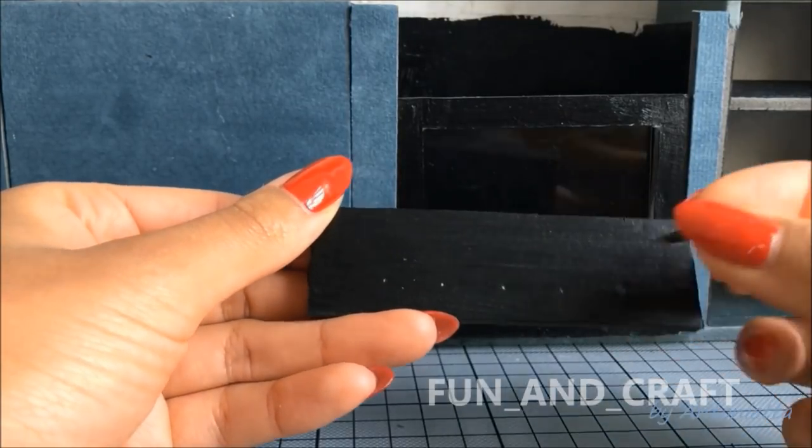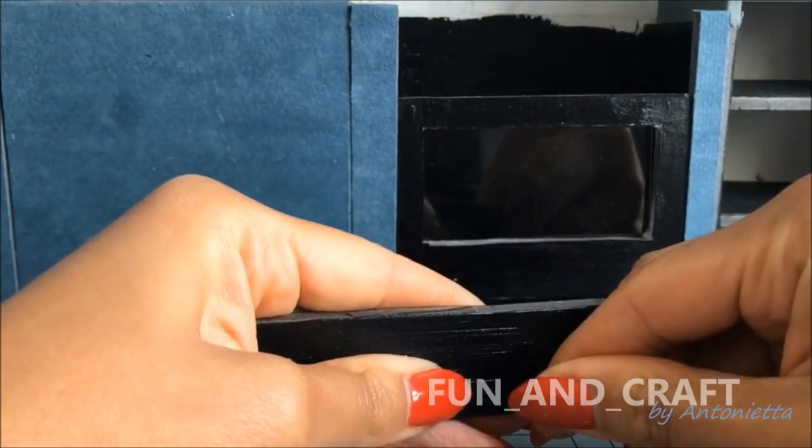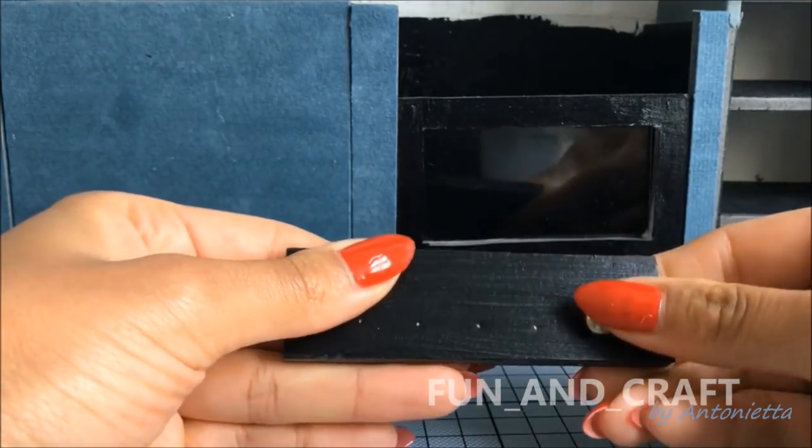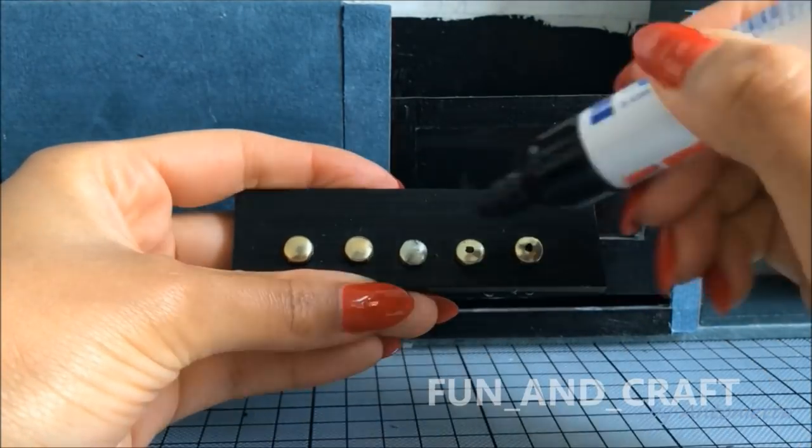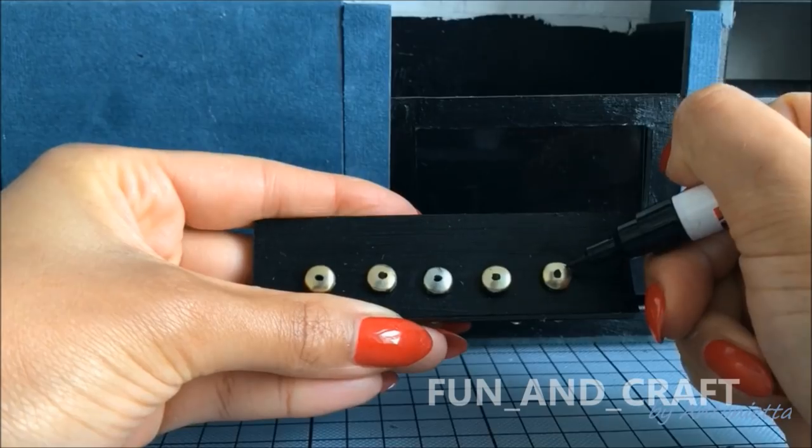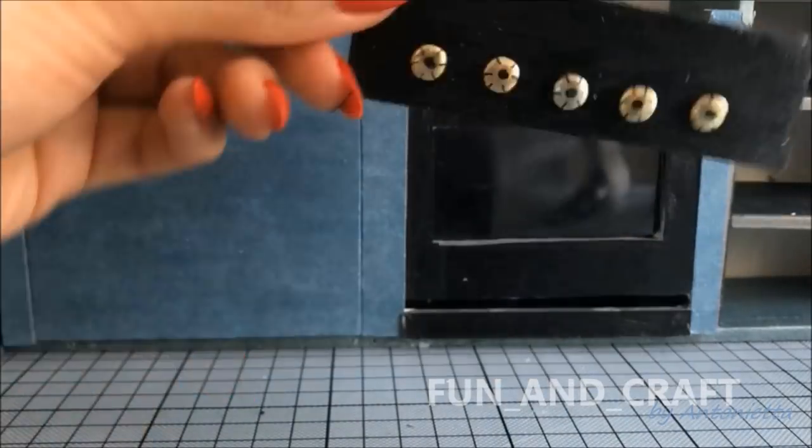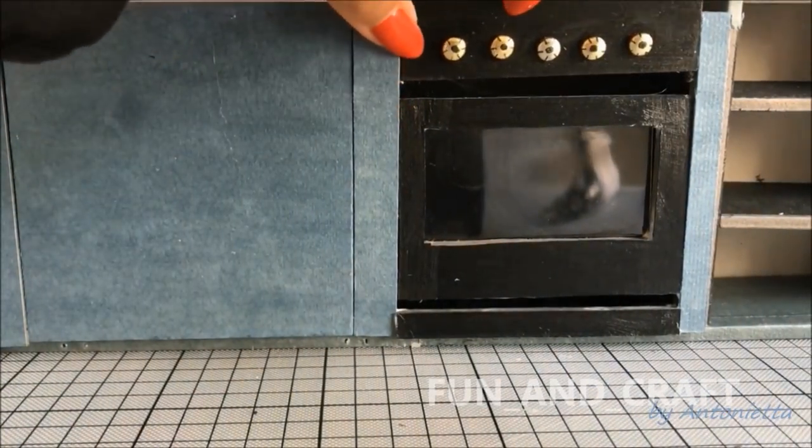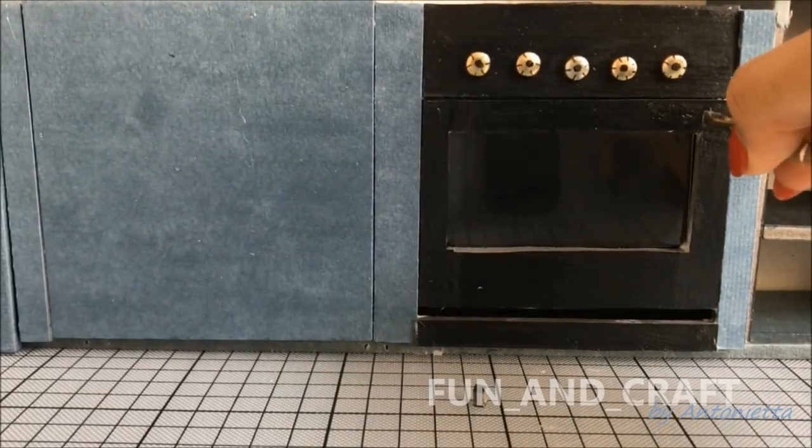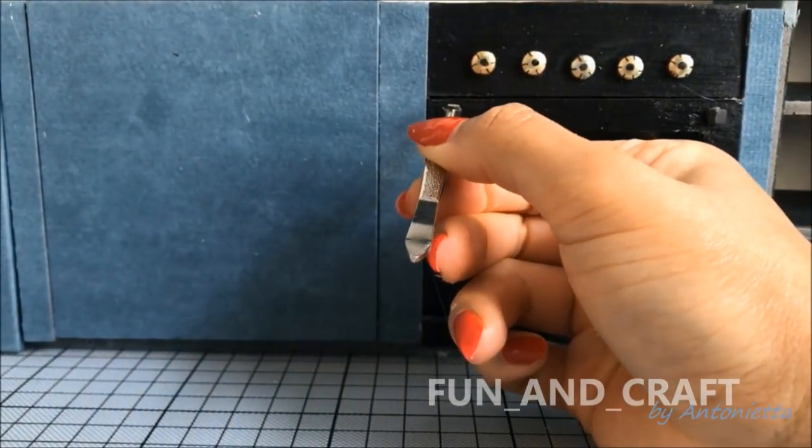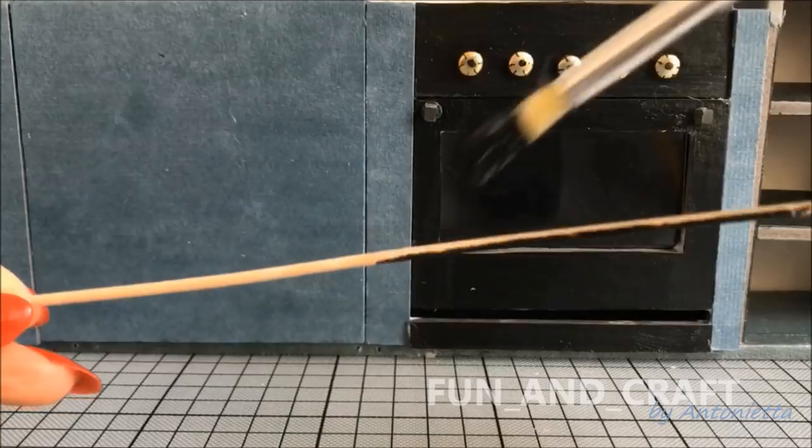For the next step you will need split pins. Poke five of them into the foam board and use a marker to draw little dots on them to make them look like little buttons. Glue two tiny pieces of foam board above the oven window, paint a cocktail stick black, and glue it on top.